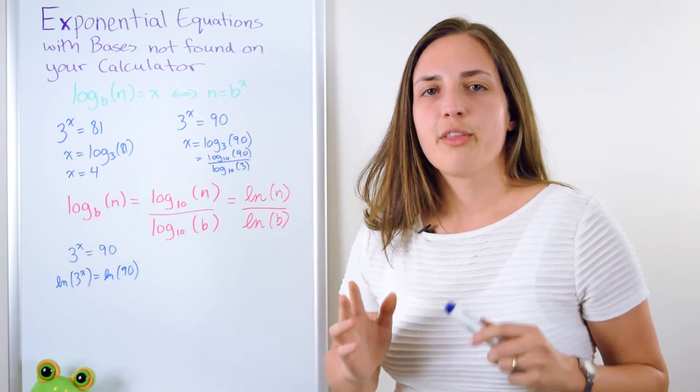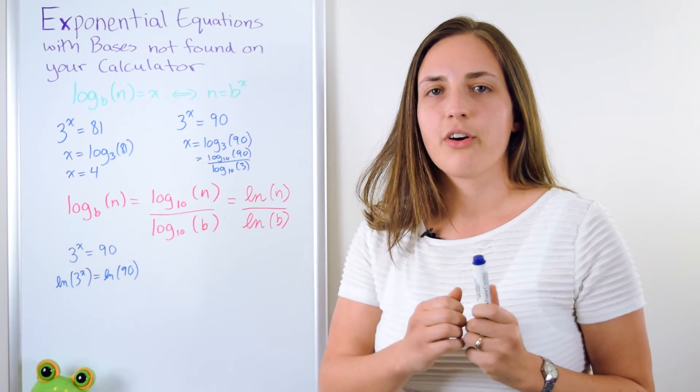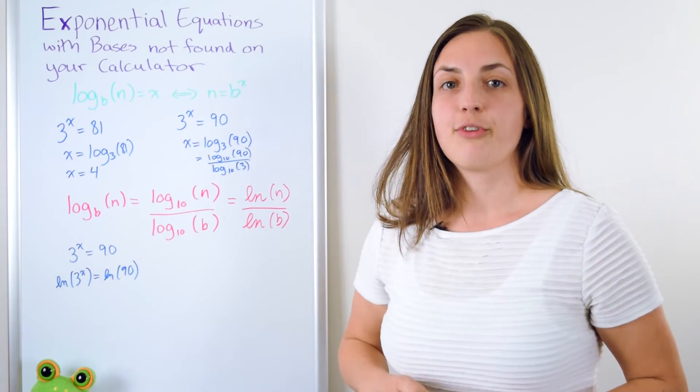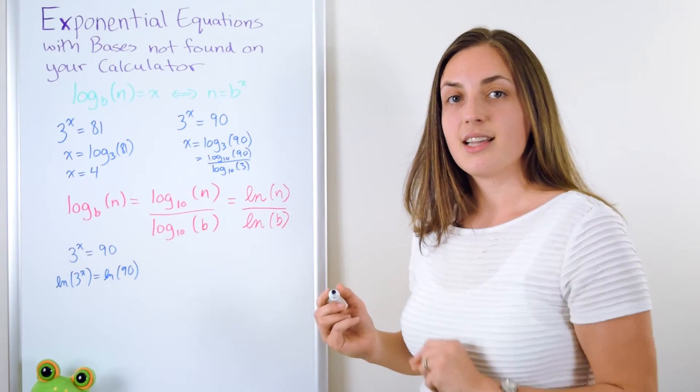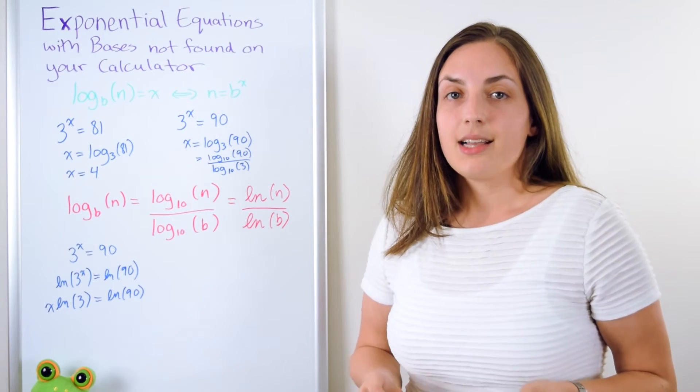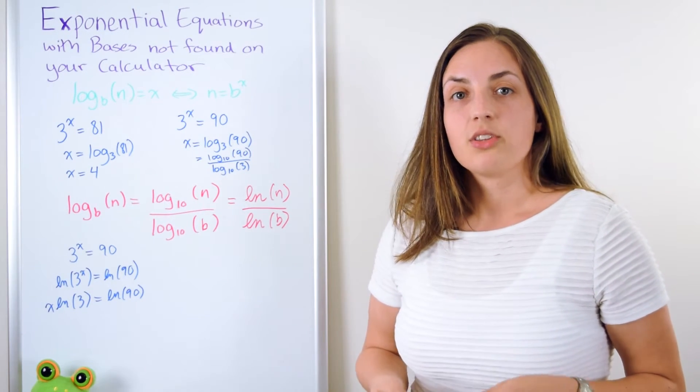Now if you remember your logarithm rules, you know that if you have a logarithm of some number to a power, you can just pull the power to the front. So I can write this left-hand side down like this. Now, x times ln 3 equals ln 90.